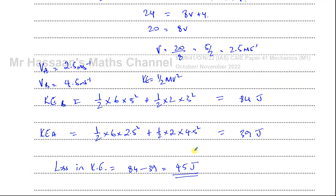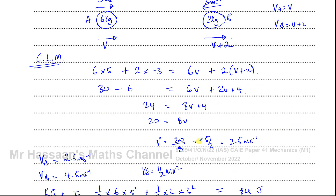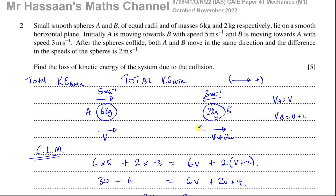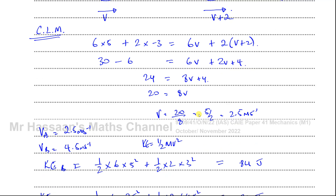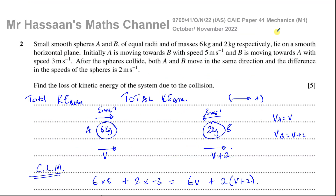So that's the answer: the loss of kinetic energy is 45 joules. This question combines momentum and energy. You'll find other questions from this paper in the playlist at the top of the screen. Other momentum and energy questions from my Cambridge M1 collection are in the playlists shown. Subscribe to the channel by clicking the link. Thanks for watching and see you soon.